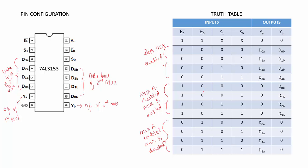When MUX A is disabled, for any combination of the select line, the output from MUX A is 0. When MUX B is disabled, the output of MUX B will be 0 irrespective of the select line. Only MUX B is enabled, so depending on the select line, a particular data line gets connected to the output: for 0 0 it is D0B, for 0 1 it is D1B, for 1 0 it is D2B, and for 1 1 it is D3B.